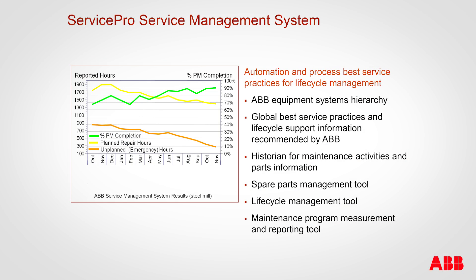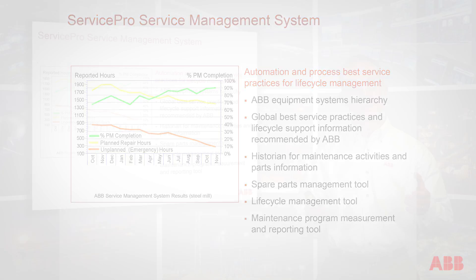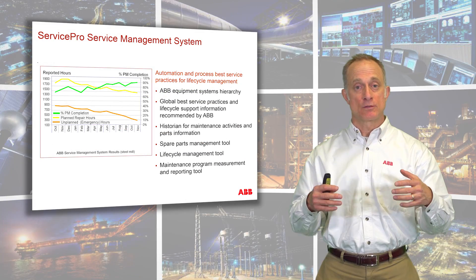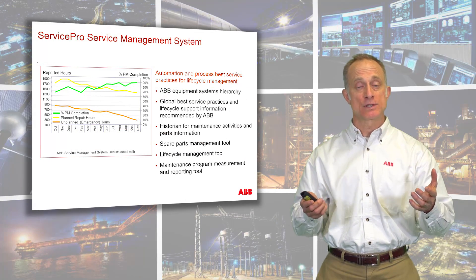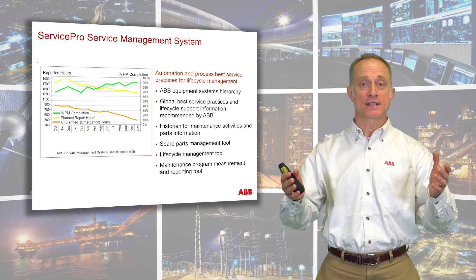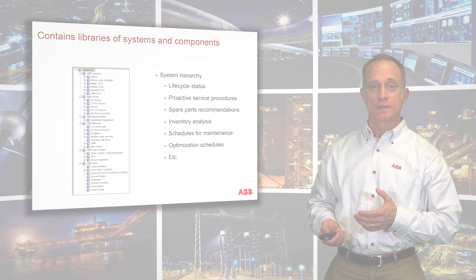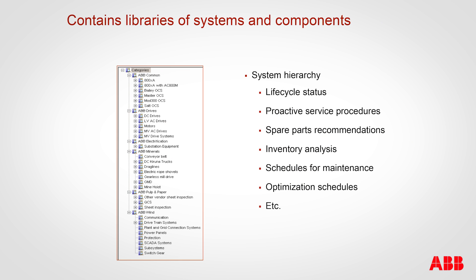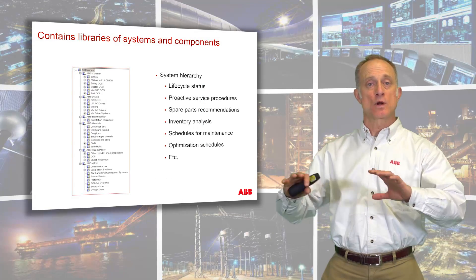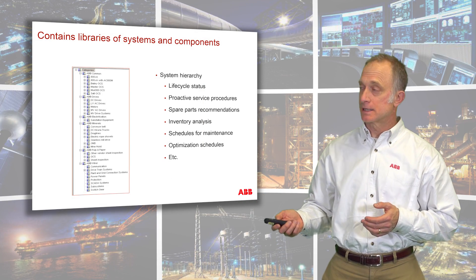ABB has its own computerized maintenance management system for ABB equipment called ServicePro. ServicePro is uniquely designed for ABB equipment and processes and comes already with a hierarchy of systems, subsystems, and components. It also comes with the preventive maintenance routines already embedded in it — many of those things that result from a failure modes and effects analysis are already embedded in ServicePro for many ABB asset classes.